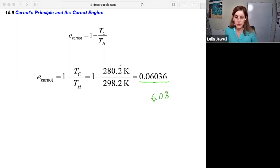We could, in this case, we do actually have four decimal places, so it is okay to have it at 6.036%. Notice 6% is not all that efficient. When you put in something, you usually expect to get more than 6% out as a result.